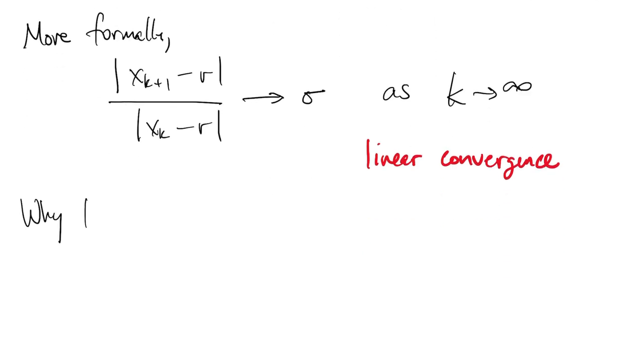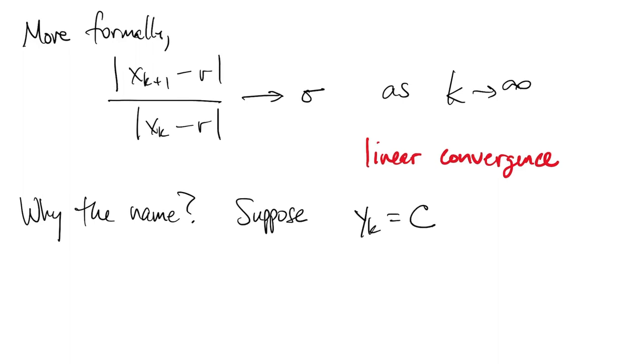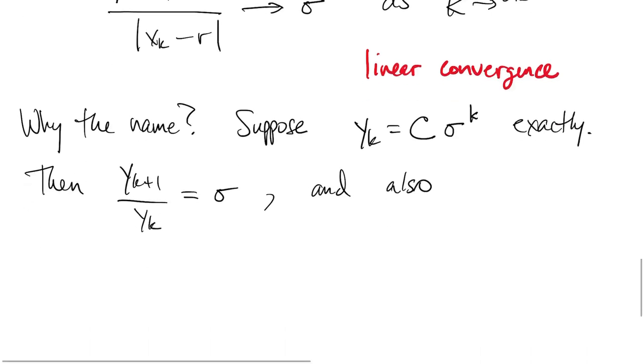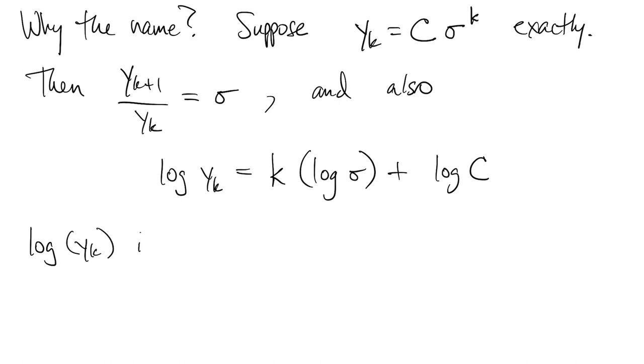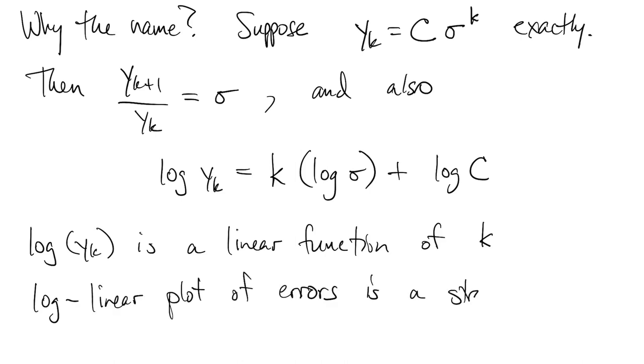Now where does this name linear come from? Well, let's suppose you have a sequence yk that's equal to a constant times sigma to the k. Then when you take those ratios, you get sigma, so that would be perfect linear convergence. And when you take the log of both sides, you can show that the log of yk is a linear function of k, which means that if you plot it on a log linear graph, you see a straight line with negative slope.